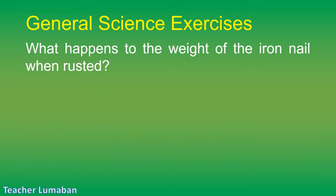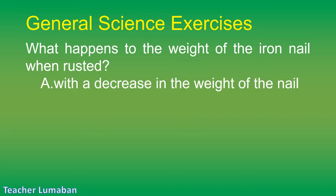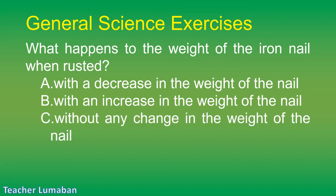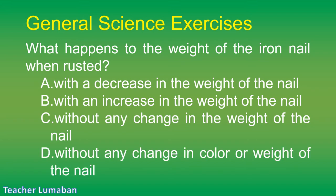What happens to the weight of an iron nail when it rusts? Letter A: decrease in the weight of the nail. Letter B: increase in the weight of the nail. Letter C: no change in the weight of the nail. Letter D: no change in color or weight of the nail.